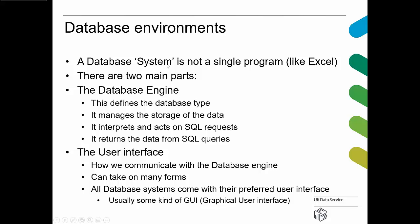A database system is typically not a single program like Excel. It has two main parts: the database engine, which defines the database type — whether it's SQL or NoSQL, and whether it's Oracle, MySQL, or another system. The engine stores the data on disk, interprets and acts on SQL requests, and returns the data from your queries. That is all the job of the database engine.